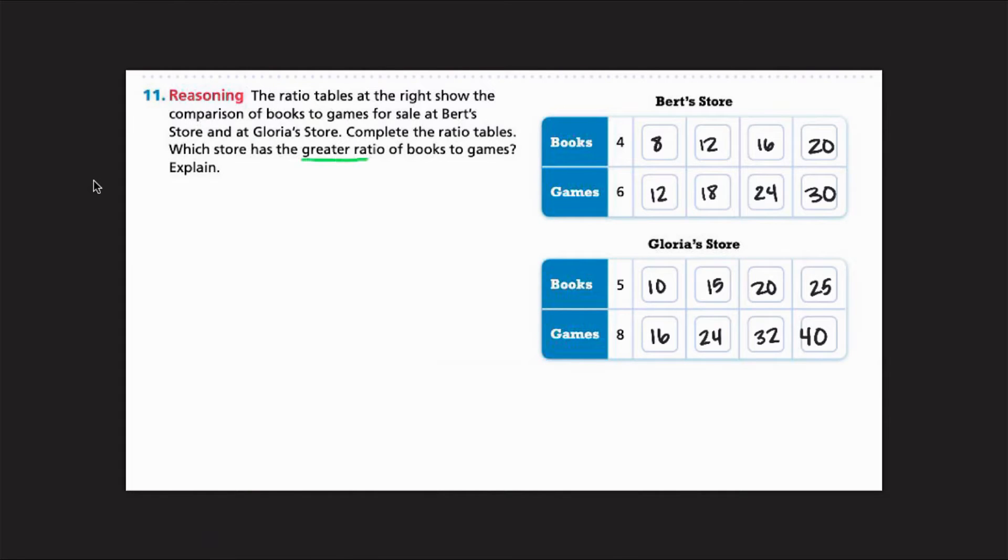So it's asking us, which one has a greater ratio of books to games? So we're looking for one that is larger, right? So we're comparing books to games. Well, I can't make a good comparison unless I have an equivalent ratio to compare against. So since I'm looking for my answer for books, I'm going to compare the games. So I'm going to look in both of my charts here and see which one is the same. I see that they both have 24.